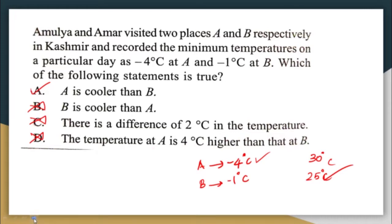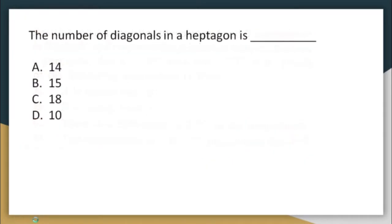The number of diagonals in a heptagon is blank. Heptagon means a seven-sided polygon. To find out the number of diagonals in any polygon, there is a very easy formula you can memorize.